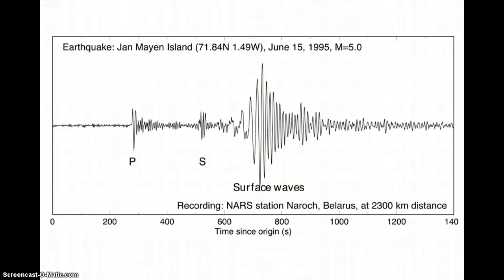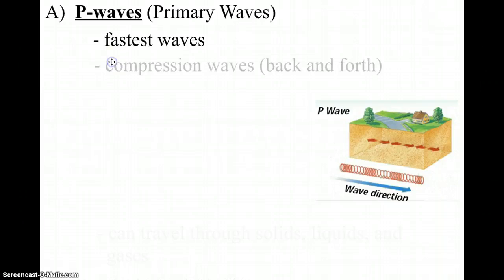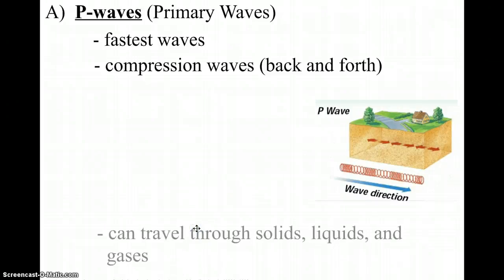Let's talk about P waves and S waves, starting with P waves. The P stands for primary. These waves travel the fastest, so they are the first waves to reach a seismic station. They are compression waves, which means the energy moves in a back-and-forth motion — basically making the crust get squeezed and stretched, kind of like playing an accordion. P waves can travel through any kind of material: solids, liquids, and gases. That's actually very important because seismic waves tell us about the inside of the Earth.